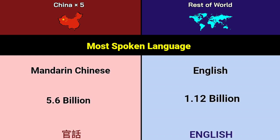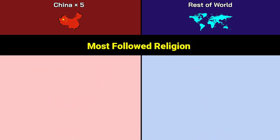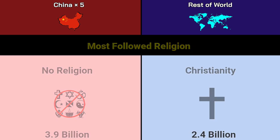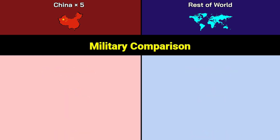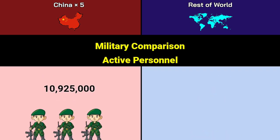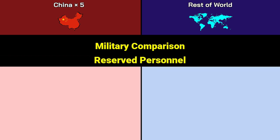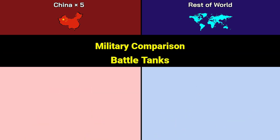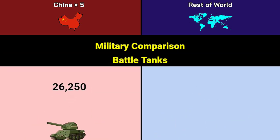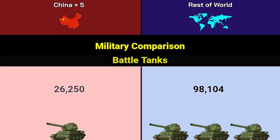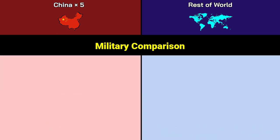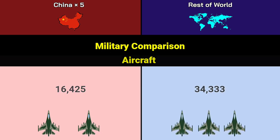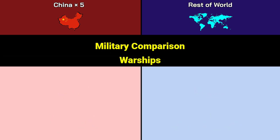Most followed religion: No religion 3.9 billion for China, Christianity 2.4 billion for Rest of World. Military comparison — active personnel: China 10.9 million, Rest of World 17 million. Reserve personnel: China 5.8 million, Rest of World 20.29 million. Battle tanks: China 26,250, Rest of World 98,104. Aircraft: China 16,425, Rest of World 3,433.